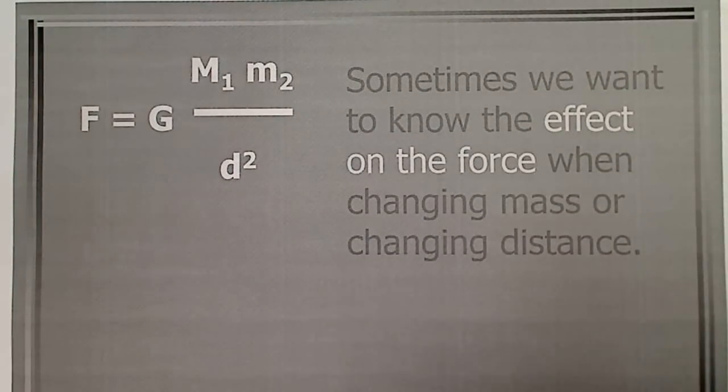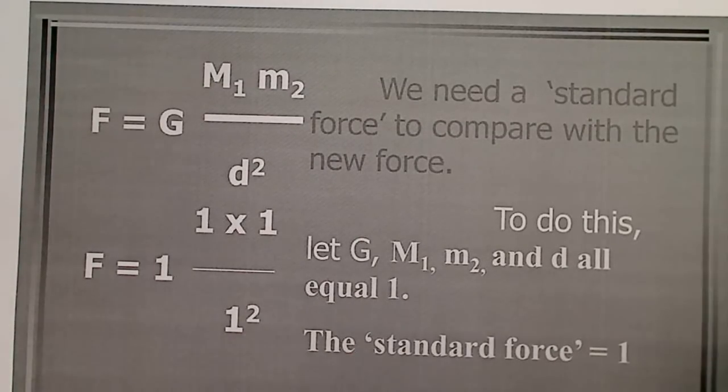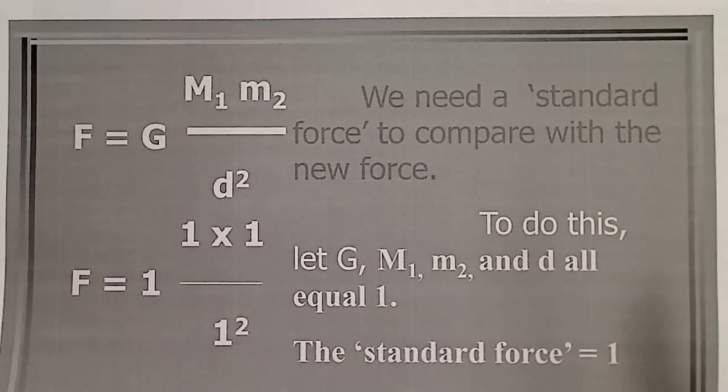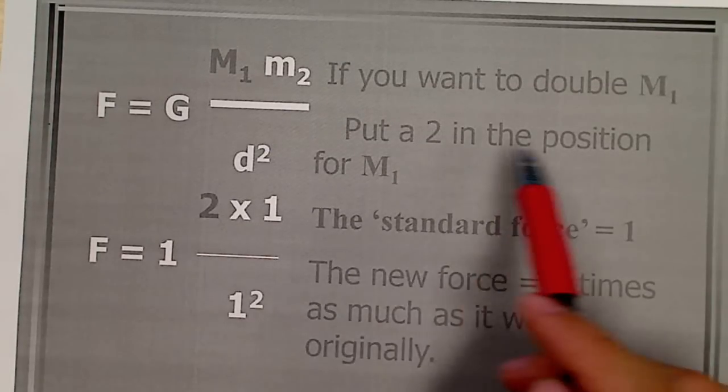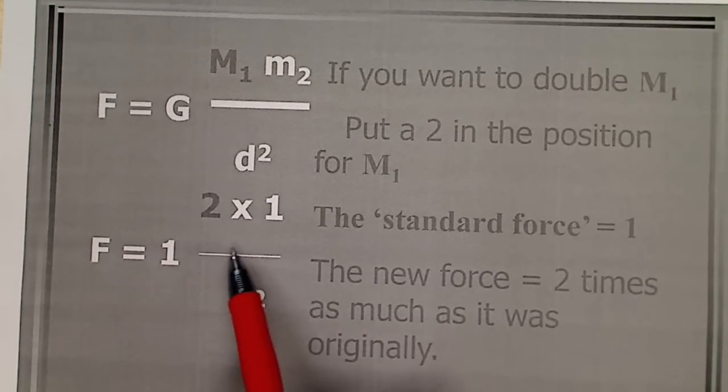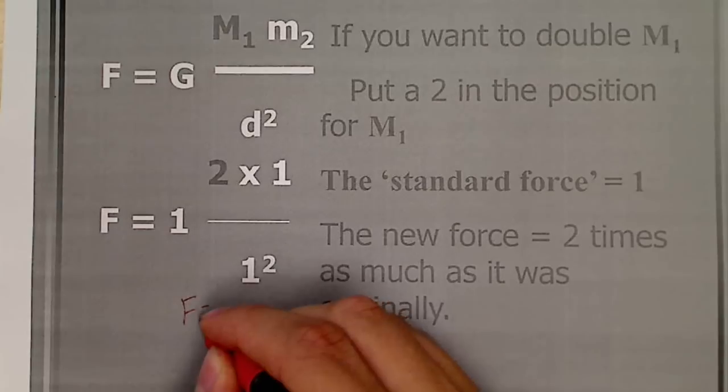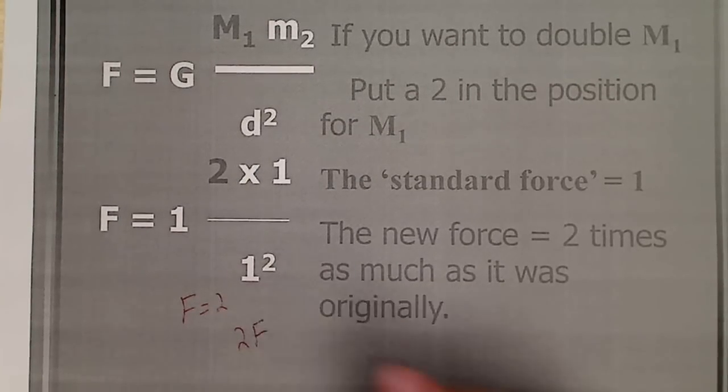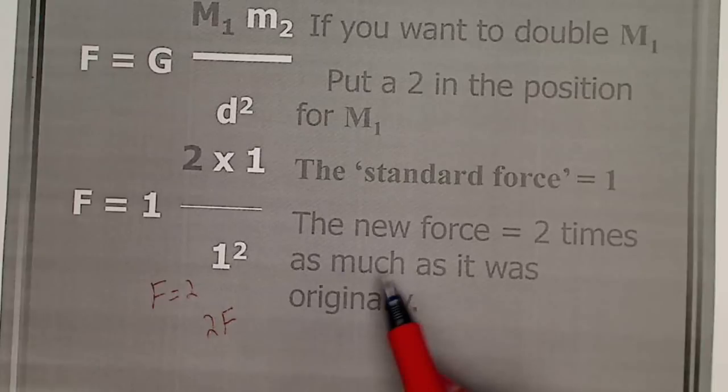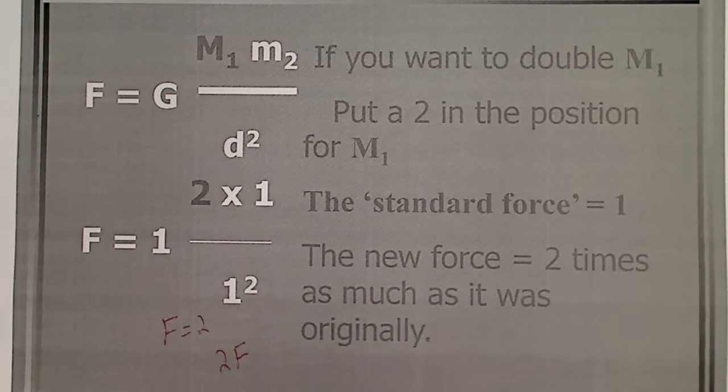Now, sometimes it's useful just to know the effect when changing mass or distance. We don't want to do the whole problem. So, we just look at how will it change. So, we start with the standard force. This is how we're going to compare everything to. So, we put 1 in for everything. 1 times 1 times 1 times 1 divided by 1 squared. This gives me my standard. Or just 1. And then we'll make changes to this. For example, what if I wanted to double M? So, I'll put a 2 in for M. Because they were all 1s. That was the standard. Now, this one's being doubled. If I work this out, I get F equals 2. We get twice the force. So, the new force is 2 times as much originally. So, if I started and had a gravitational force of 5 newtons. But then I doubled the mass. Then I have 10 newtons.